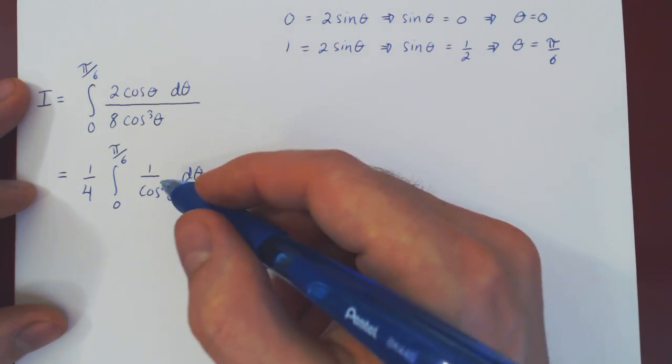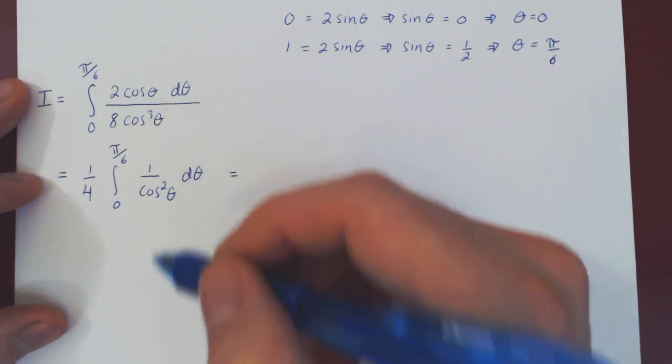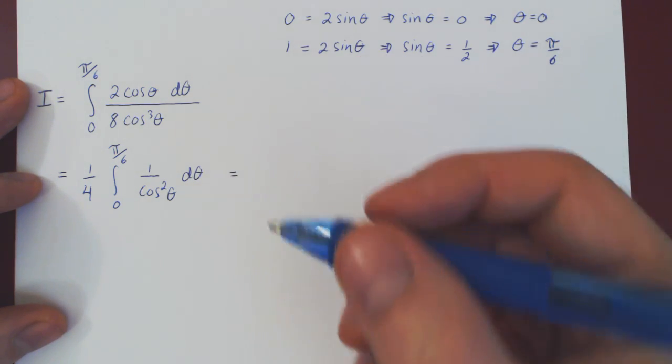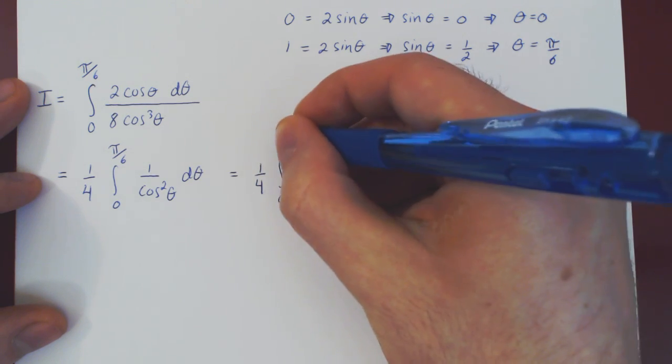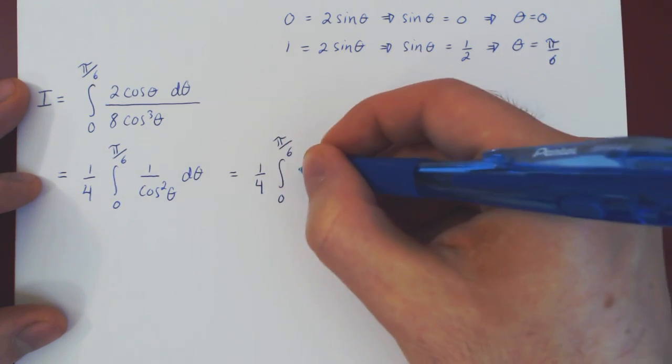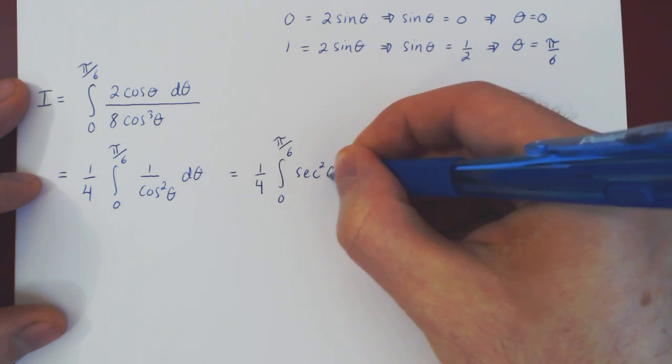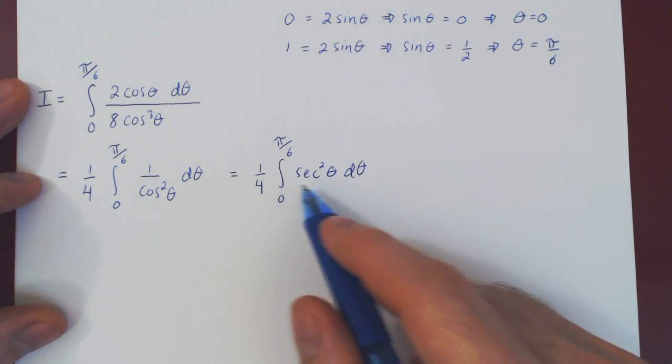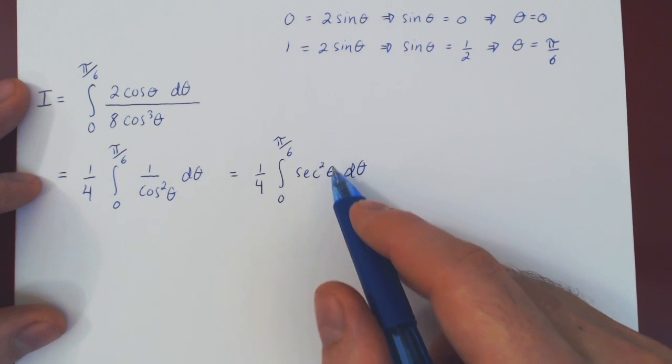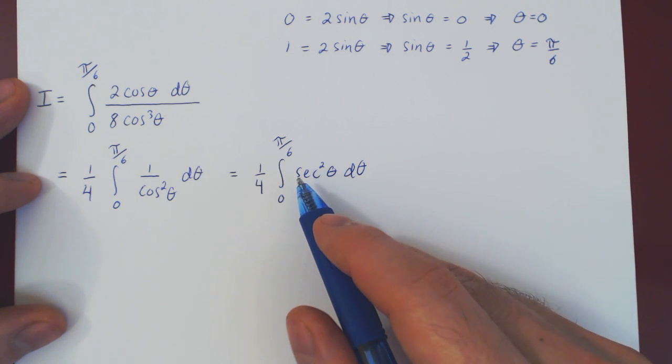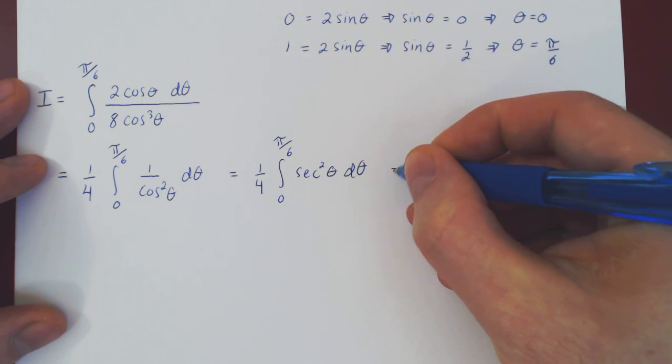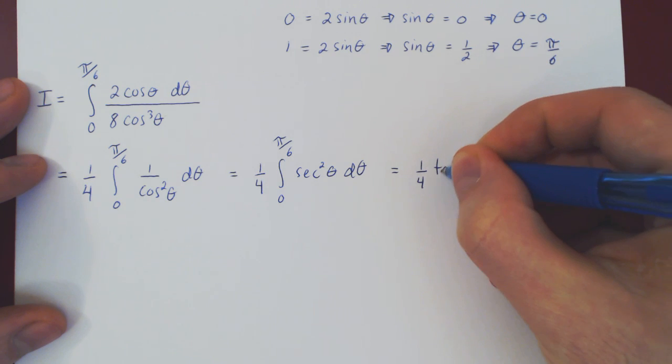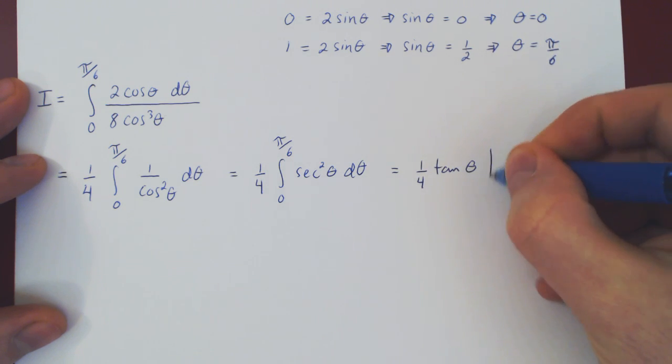Well, how do we evaluate this definite integral? Well, 1 over cos squared is secant squared. So we have a quarter, the integral from 0 to pi over 6, of secant squared, theta d theta, and this integral is trivial, right? We are asking for a function whose derivative is secant squared, that is, of course, simply tangent. So we have a quarter, tangent of theta, and we evaluate from 0 to pi over 6.